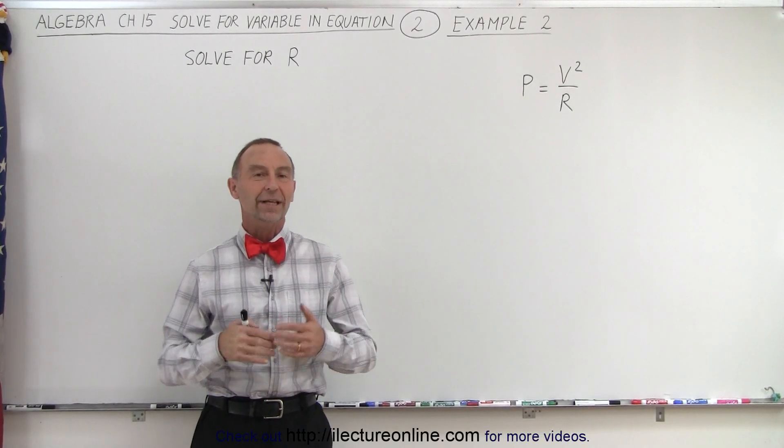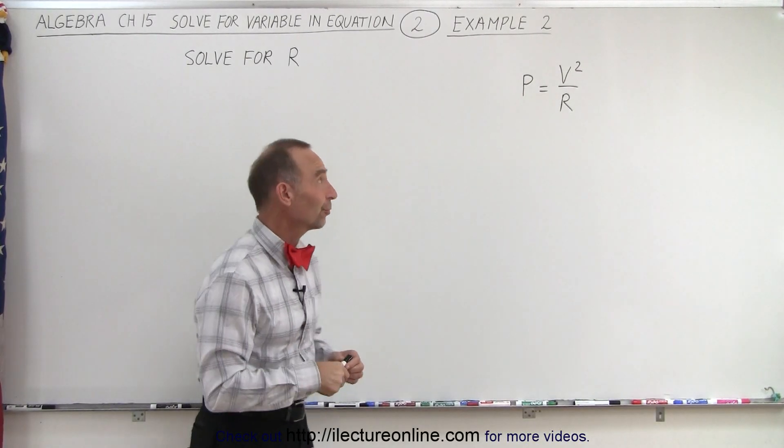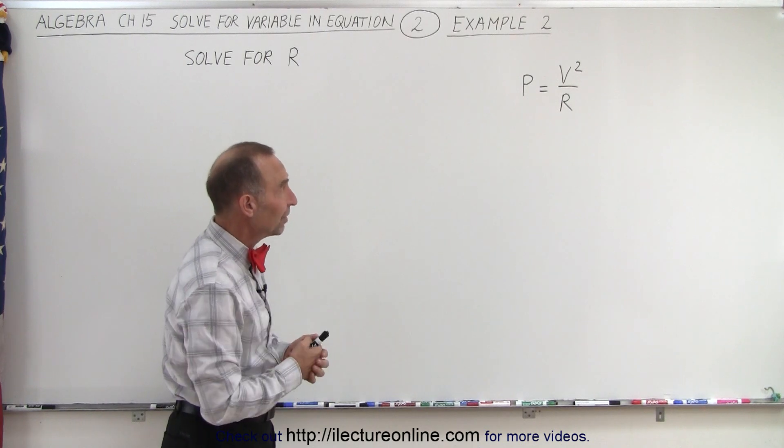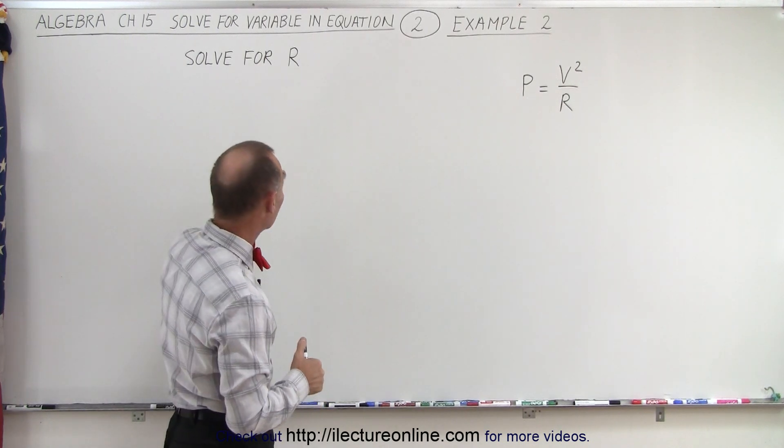Welcome to ElectronLine. Our next example is similar to the first one. Notice it's P equals V squared over R, and we're supposed to solve for R.